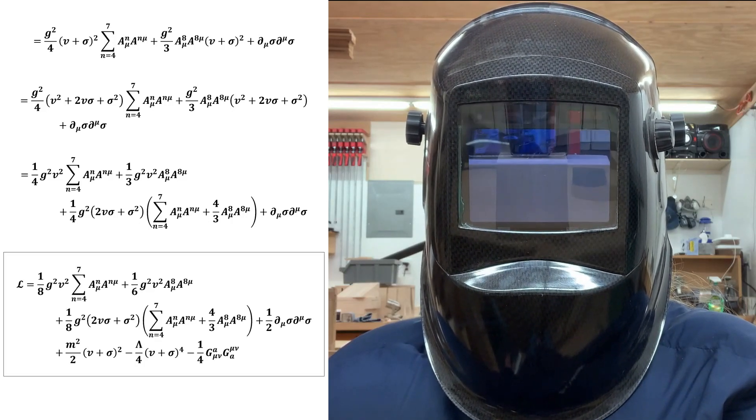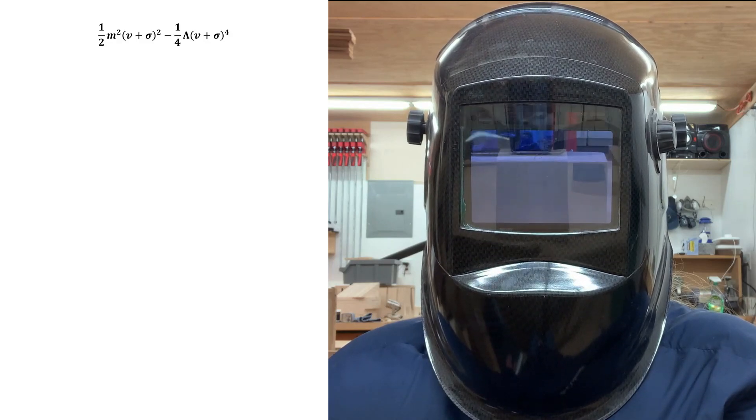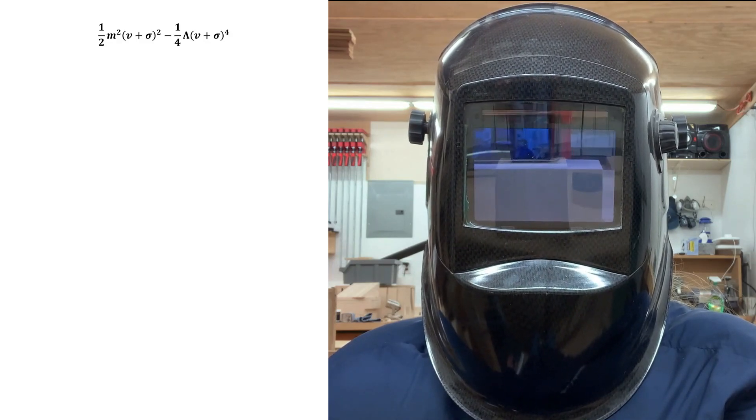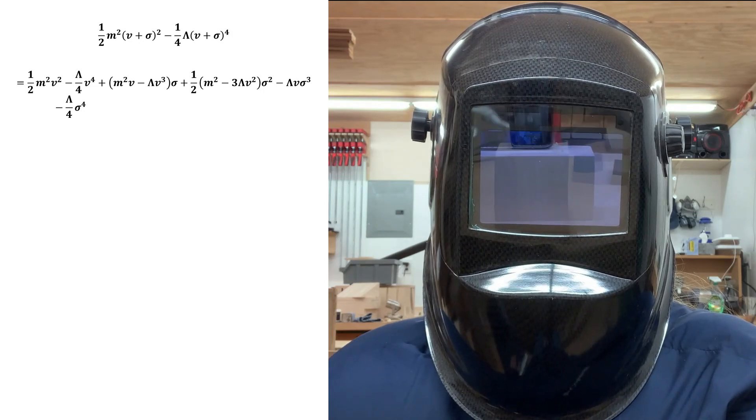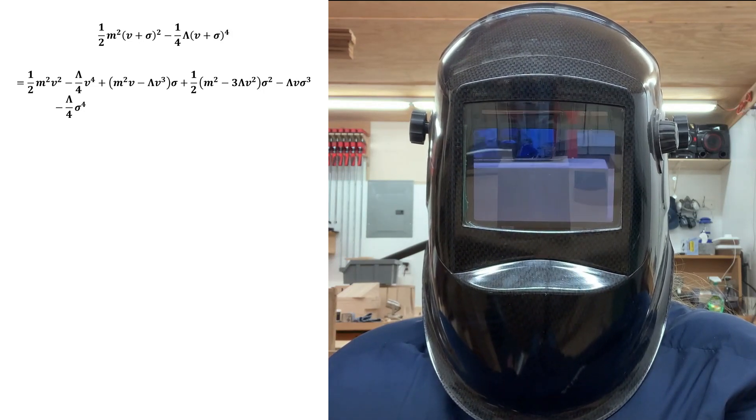The last task is to simplify the potential term. Expanding out the powers and refactoring gives us this. Constant shifts don't matter in the Lagrangian density and can be ignored. That leaves us with this.